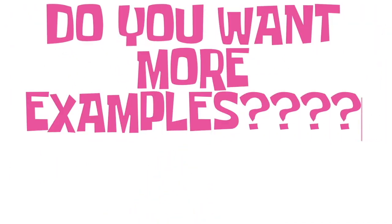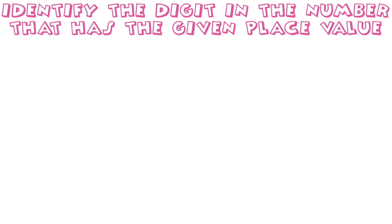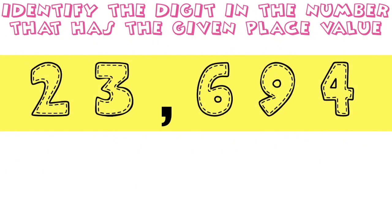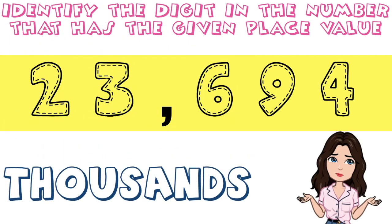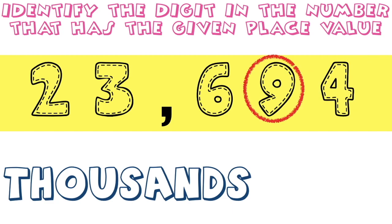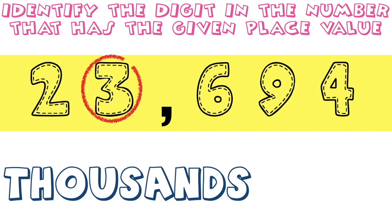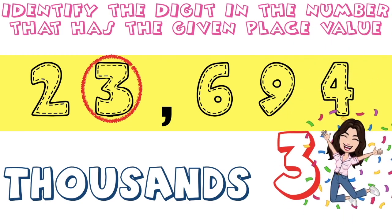Do you want more examples? Okay, your wish is my command. Let's have more examples. Here, let's identify the digit in the number that has the given place value. For 23,694, what is the digit in the thousands place? Starting from the right: ones, tens, hundreds, thousands. So digit 3 is in the thousands place.